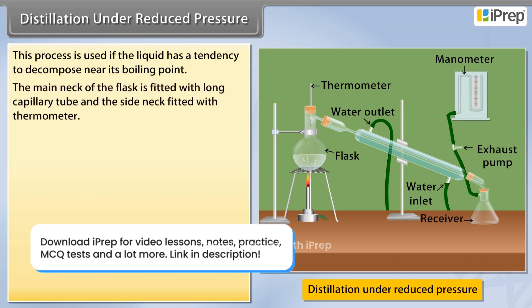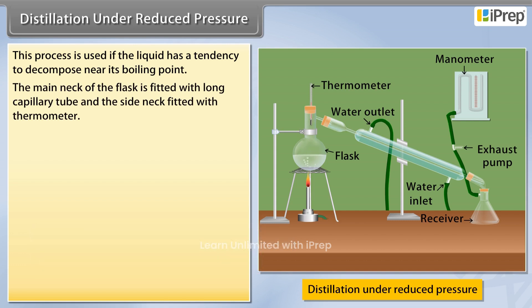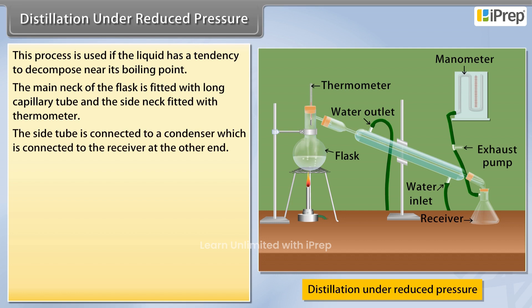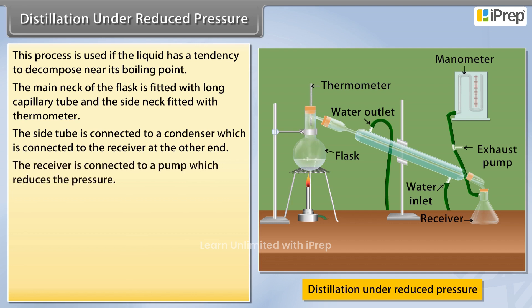The main neck of the flask is fitted with a long capillary tube and the side neck is fitted with a thermometer. The side tube is connected to a condenser, which is connected to the receiver at the other end.